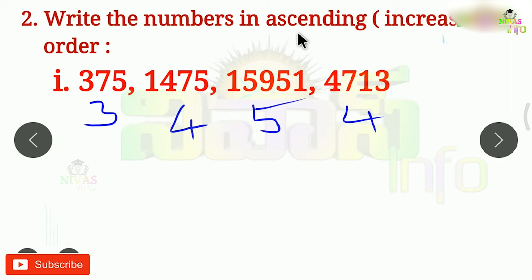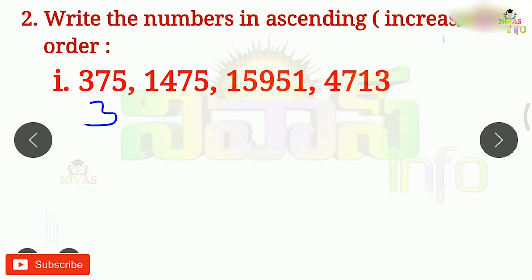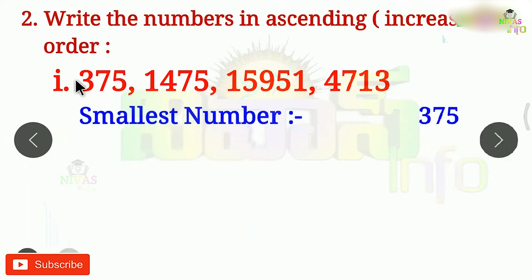The ascending order starts with the smallest number. The smallest number is 375. We start counting from 375. We don't start with any other number. The next number is the second smallest. Here is a 4-digit number, and here is a 5-digit number.